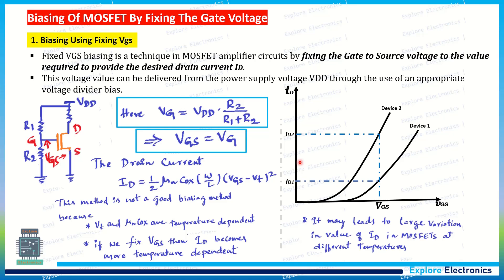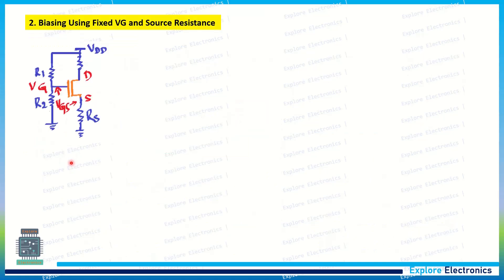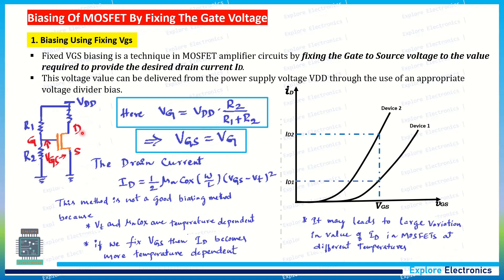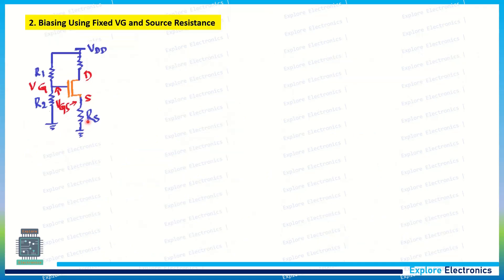To avoid that, we can fix this using a simple resistor to put in the source of the transistor. That is the second method: biasing using fixed VG and a source resistance. The circuit, if you compare with the previous one, it is the same. There is an added source resistance here, this RS.